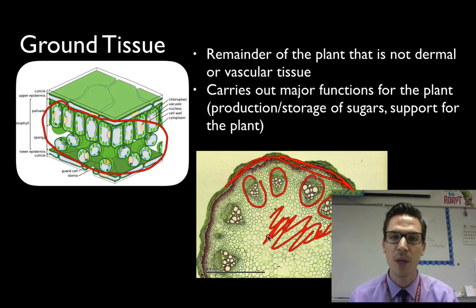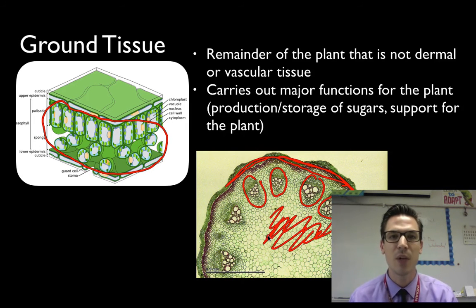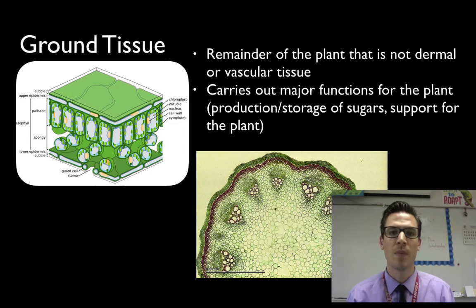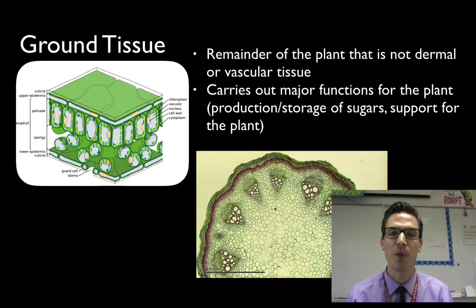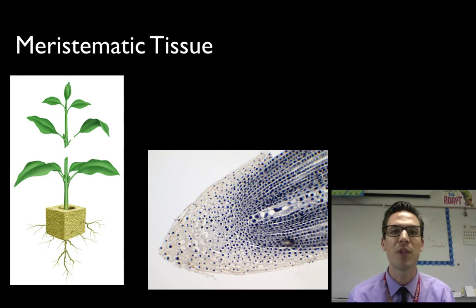If you eat a plant — celery, carrot, or potato — the part you're really eating for nutrients and water is the ground tissue. So we've now talked about the three major types of plant tissues: dermal tissue, which provides protection; vascular tissue, which transports materials throughout the plant; and ground tissue, which handles everything else. But what about growth? We haven't talked about how plants grow, and that is thanks to a type of tissue called meristematic tissue.